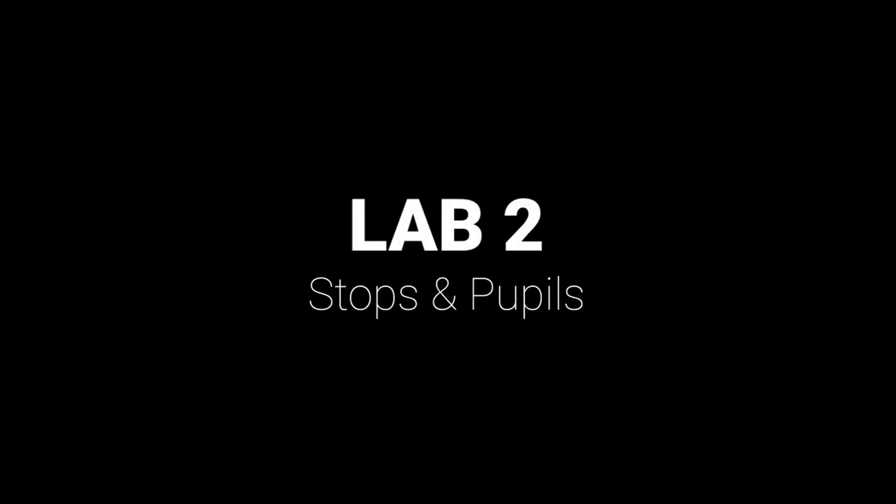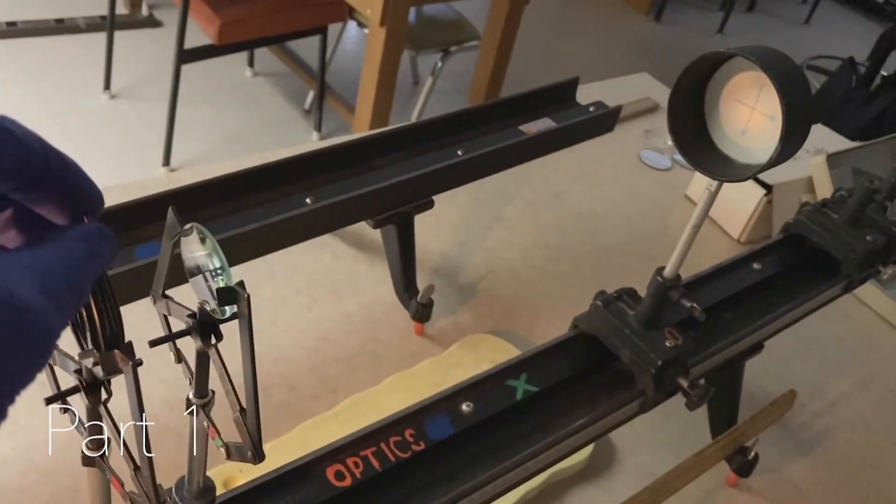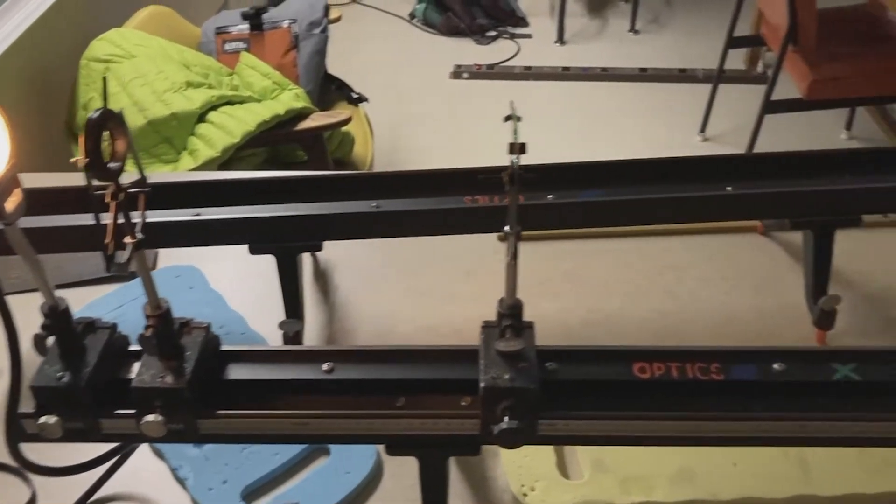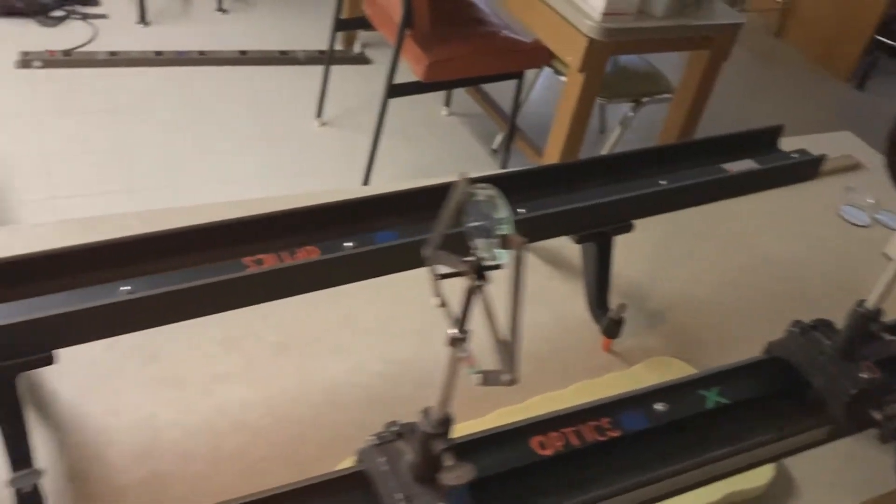Welcome to Lab 2 on Stops and Pupils. In Part 1 we've set up a simple lens system with an iris in front of the lens, and we'll observe the effect that the iris opening has on the image when it's close to the lens and then when it's close to the light source.